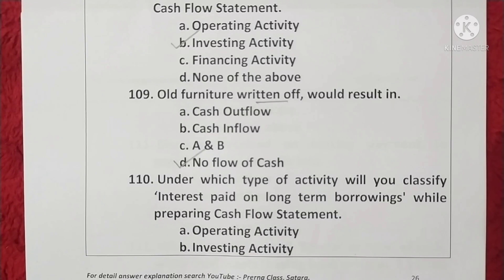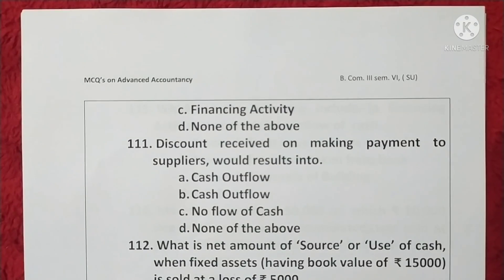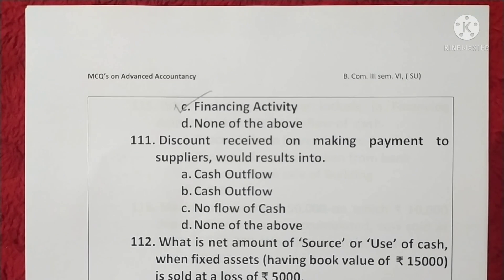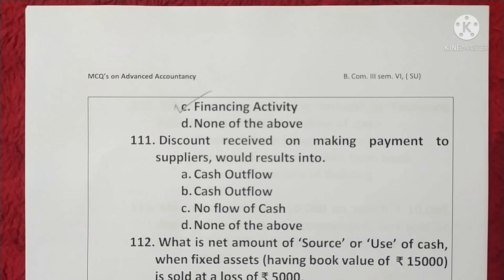Question 110. Under which type of activity will you classify interest paid on long-term borrowings while preparing a cash flow statement? Interest paid on long-term borrowings is a financing activity. Option C is correct. Question 111. Discount received on making payment to suppliers would result in no flow of cash — discount received is just a concession, not an inflow or outflow. Option C is correct.